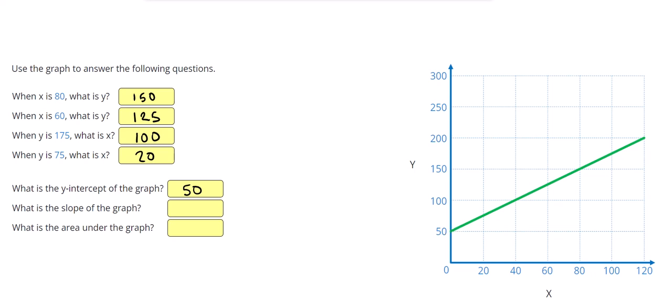All right, next, it asks us, what is the slope of the graph? So the slope equals rise over run. So what I want to do is I want to pick two points. You can pick any two points you want, but I'm going to pick the start and the end and calculate the rise and the run.